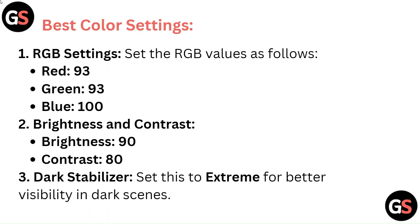For best color settings, set the RGB values as follows: Red 93, Green 93, Blue 100. Set Brightness to 90 and Contrast to 80. For Dark Stabilizer, set this to Xtreme for better visibility in dark scenes.